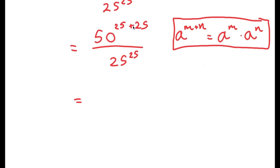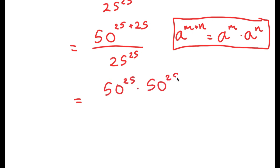So 50 to the power of 25 plus 25, using this property, turns into 50 to the power of 25 times 50 to the power of 25, and I still have this over 25 to the power of 25.